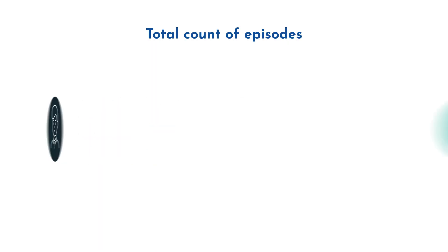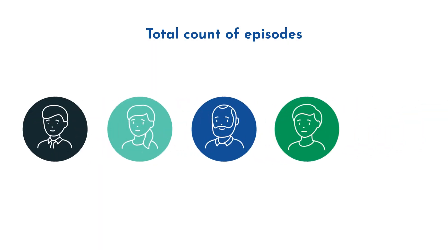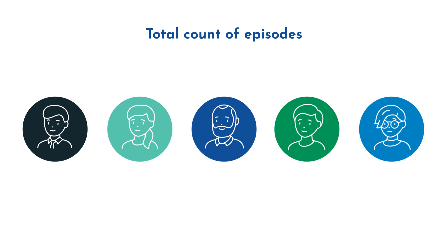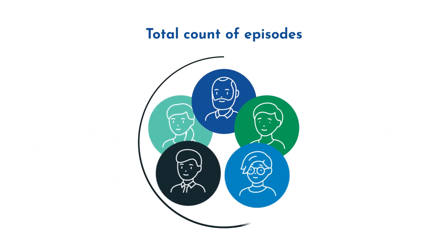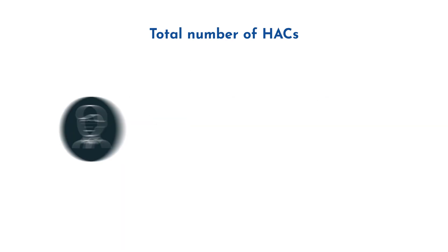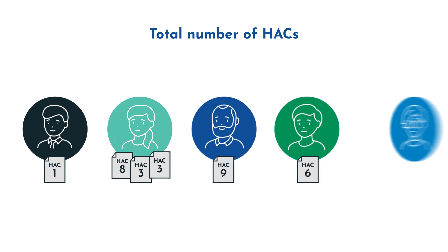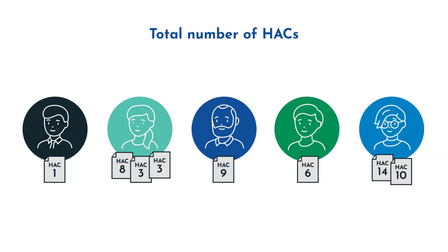Before we explore the filters on the Benchmarking Portal, let's go over some useful definitions. Total count of episodes refers to the number of hospital admissions which led to at least one kind of HAC. Total number of HACs is the sum of all HACs counted across all patients.